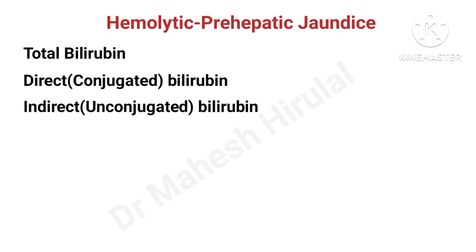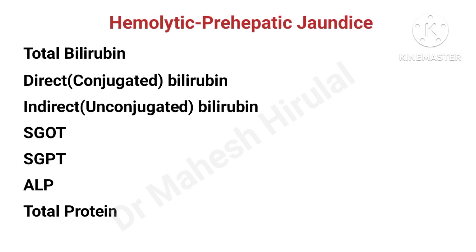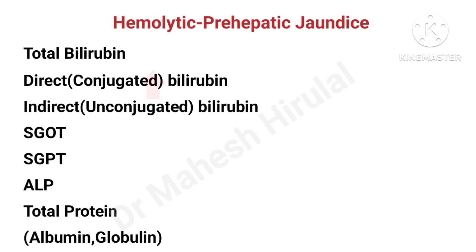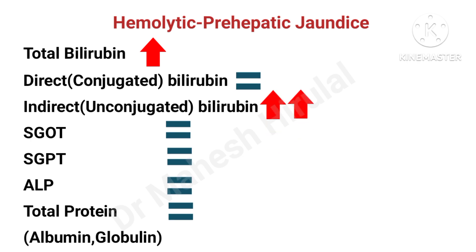In hemolytic jaundice, there will be a rise in total bilirubin, especially a rise in indirect bilirubin. Direct bilirubin will be normal. Other parameters like SGOT, SGPT, alkaline phosphatase and proteins will be within normal limits.